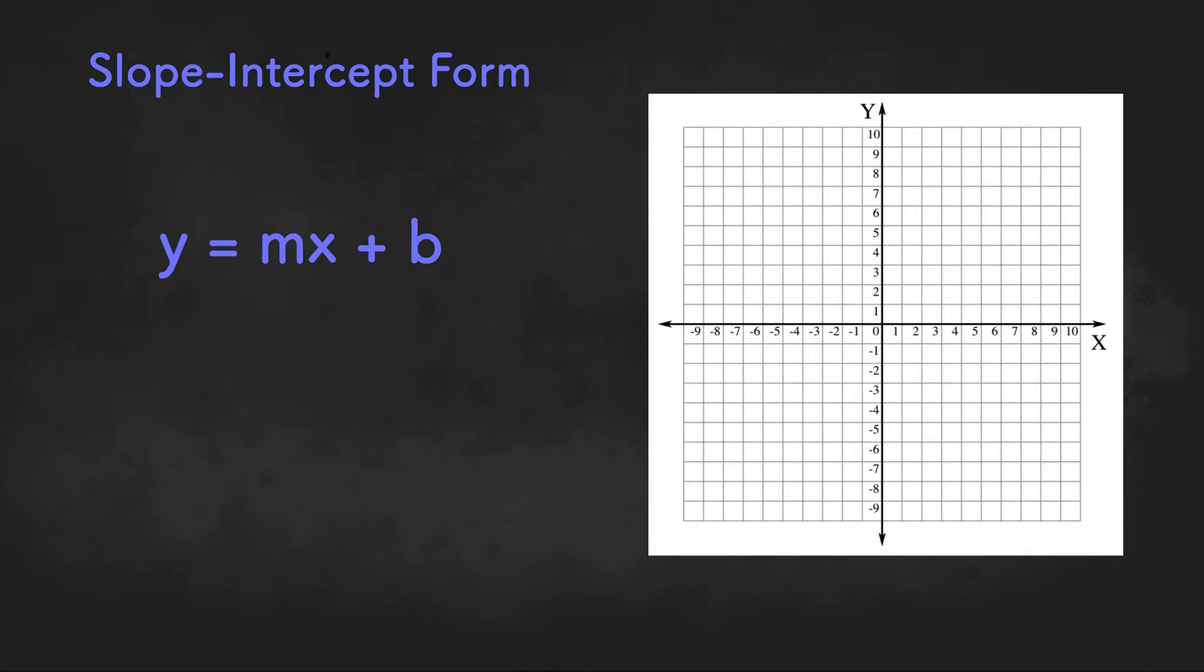So first of all, there are three forms of linear equations: slope-intercept form, point-slope form, and standard form. Each of these forms will help us graph and write equations in different ways.